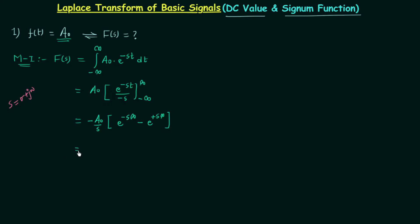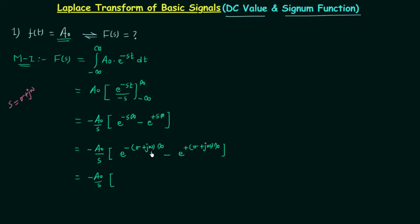In this way we have the bilateral Laplace transform equal to minus A₀ over s, inside the bracket: e^(−(σ+jω)·∞) minus e^(+(σ+jω)·∞). We can write e^(−(σ+jω)·∞) as e^(−σ·∞) multiplied by e^(−jω·∞). Since ω is a finite value (the angular frequency), multiplying it by infinity gives infinity, so ω·∞ is infinity.